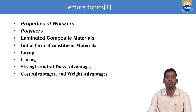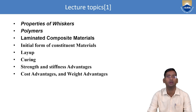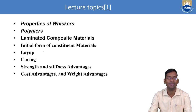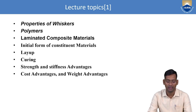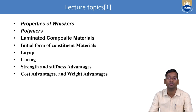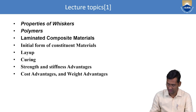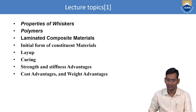Our lecture topic will cover: first, we will see the properties of whisker, then what is polymer and types of polymer, then laminated composite materials, then constituent materials required for manufacture. We will then come to manufacturing methods of lay-up and curing method, strength and stiffness advantages, and cost advantages and weight advantages.